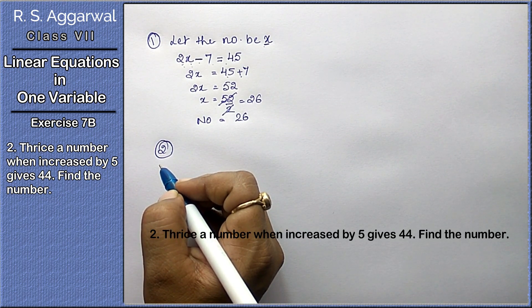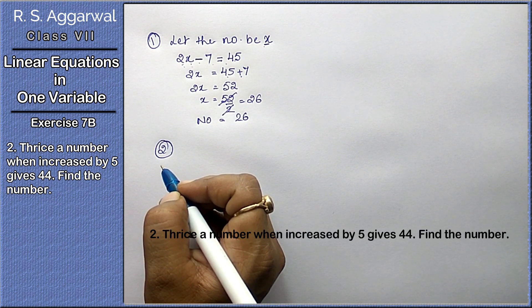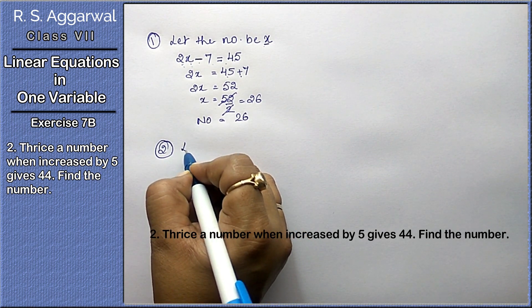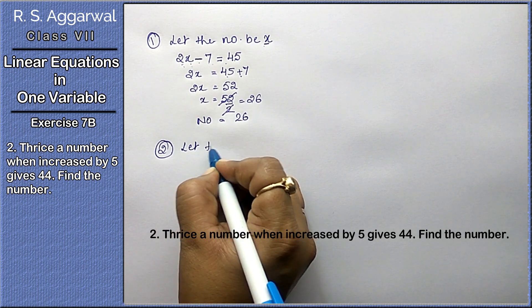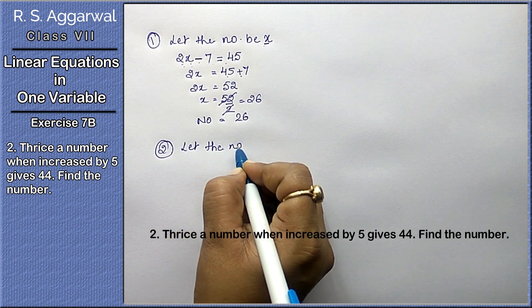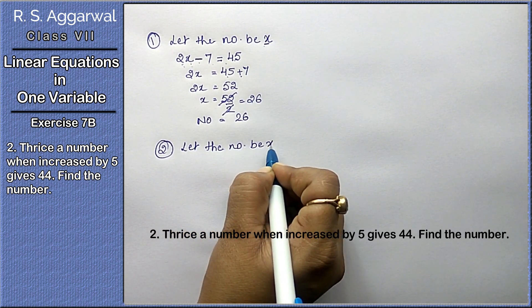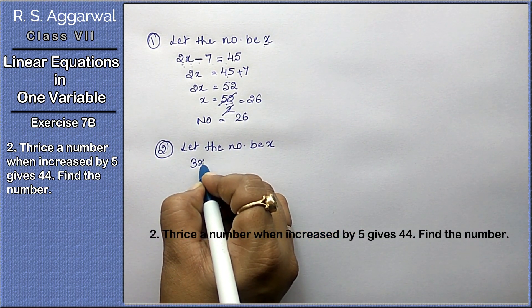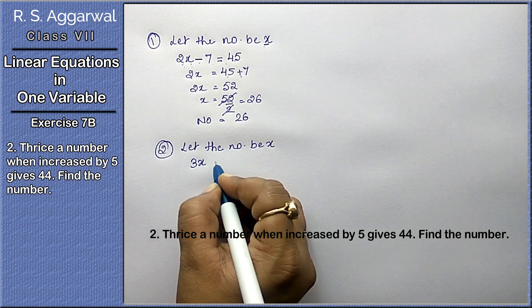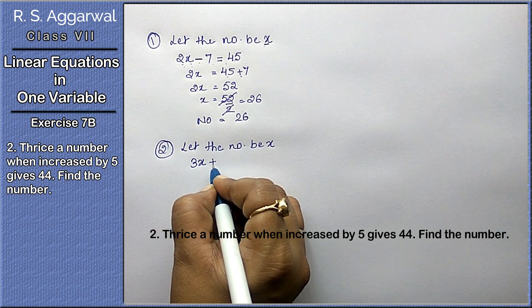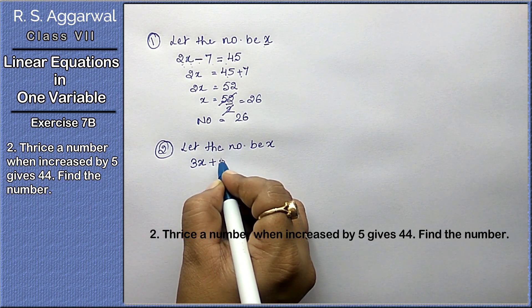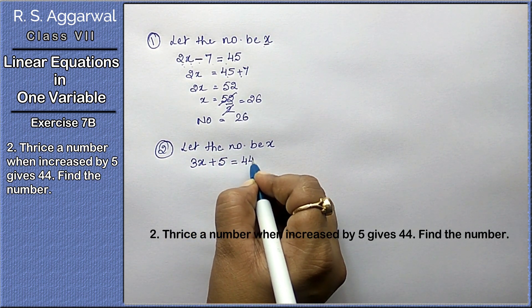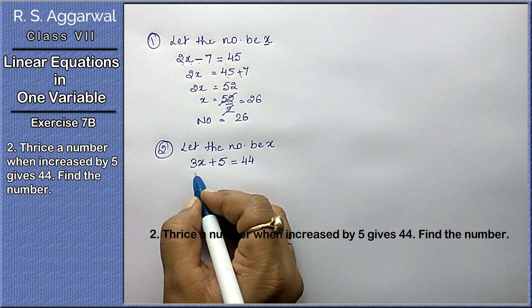Hence the number is 26. Let's do the second question. Thrice a number when increased by 5 gives 44, find the number. That means we have to let the number be x. Thrice a number means three times the number.